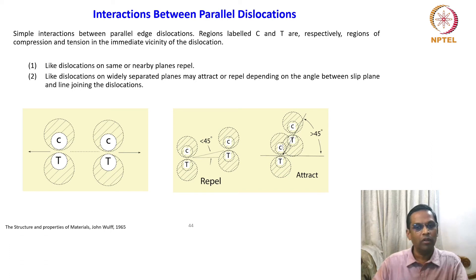If the like dislocations are widely separated, they may attract or repel depending upon the angle between the slip plane and the line joining the dislocations. To understand this, this schematic is brought here. Suppose this is one dislocation and this is another dislocation, the angle between these two - angle between slip plane and the line joining the dislocations. This is the line joining dislocations, this is the slip plane. If it's less than 45 degrees, then it is still going to repel. If this is going to be more than 45 degrees, then you see that the situation is quite different.